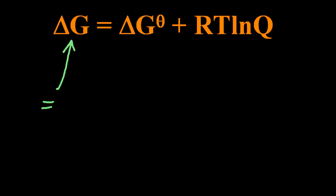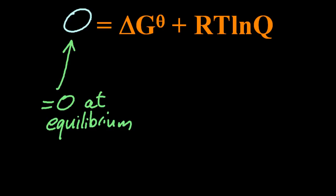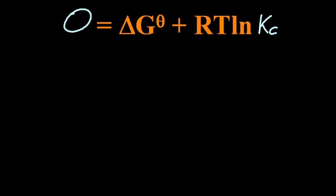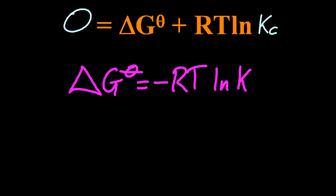The delta G on the left, when that's zero, you are at equilibrium. And therefore Q, the reaction quotient, turns into Kc, the equilibrium constant. And rearrange that to get delta G theta equals negative RT ln Kc.